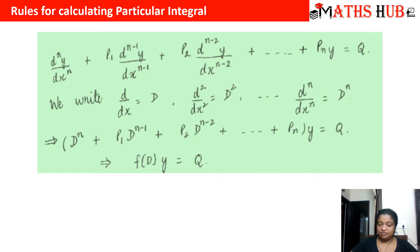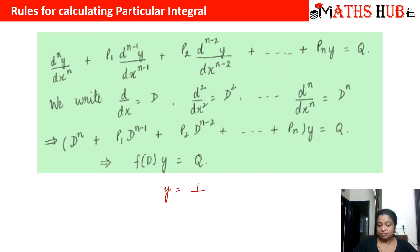In that symbolic form the first term reduces to Dⁿ, and we have p₁Dⁿ⁻¹ + p₂Dⁿ⁻² + ... + pₙ, with y common in all terms. So we get f(D)·y = Q, which gives us y = (1/f(D))·Q. This becomes your formula to calculate the particular integral, and depending upon the right-hand side function we have different rules to apply.